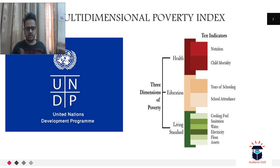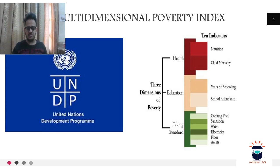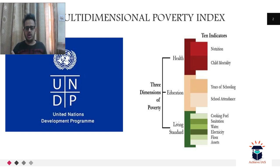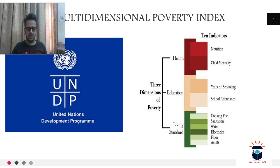The Multi-Dimensional Poverty Index tries to identify the extent of poverty by looking at health, education, and living standard indicators. If a person is unable to meet one-third of these ten indicators — that is, three out of ten — they are considered to be in poverty.